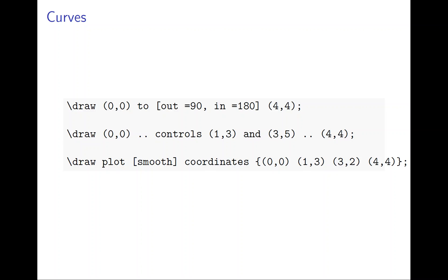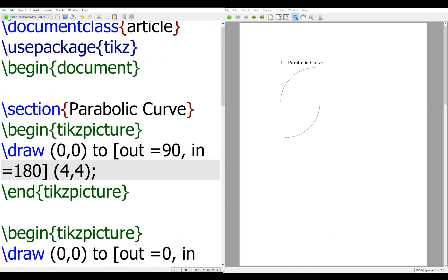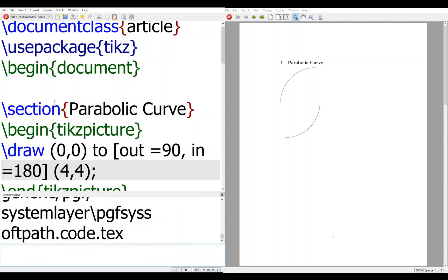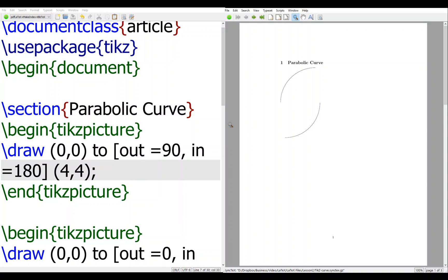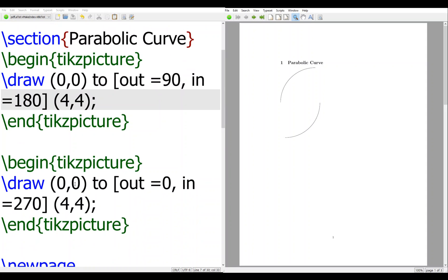And this is the first parabolic graph. Let me show you how you draw it. Here, parabolic curve. And the first one is, draw is from 0,0 out 90 degrees. So that's how you go out. And 4,4 come up in 180. So that's why this is the graph we have.